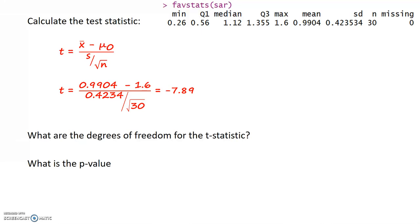Every T statistic has a degree of freedom that goes along with it. For a one sample T test, the degrees of freedom is n minus 1. So in this case, we have 29 degrees of freedom.